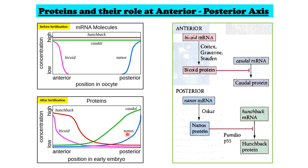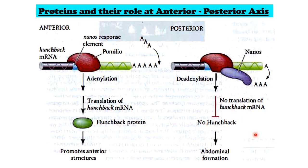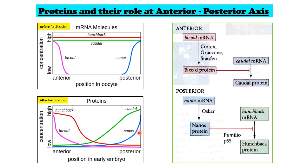Similarly, nanos suppresses the translation of hunchback, but indirectly. Nanos binds to pumilio, which is needed for the polyadenylation of hunchback mRNA and hence its translation into hunchback protein. In the anterior end, hunchback mRNA is polyadenylated in the presence of pumilio, and the mature mRNA is translated into hunchback protein, leading to formation of anterior structures. In the posterior end, pumilio interacts with nanos and polyadenylation of hunchback mRNA is prevented. So in the absence of polyadenylation, no translation takes place, no hunchback protein is formed, and abdominal formation occurs instead. In this way, the concentration gradient of bicoid and nanos maintains the concentration gradient of caudal and hunchback protein as well.